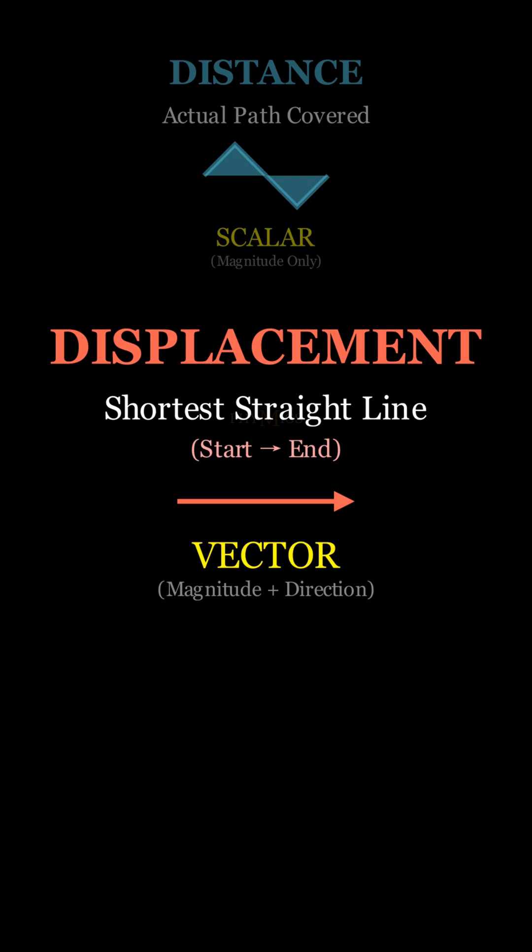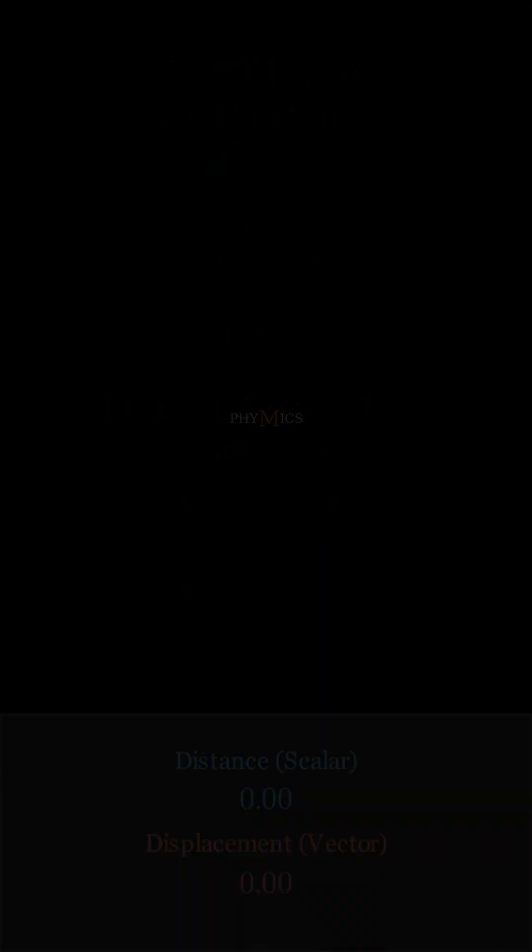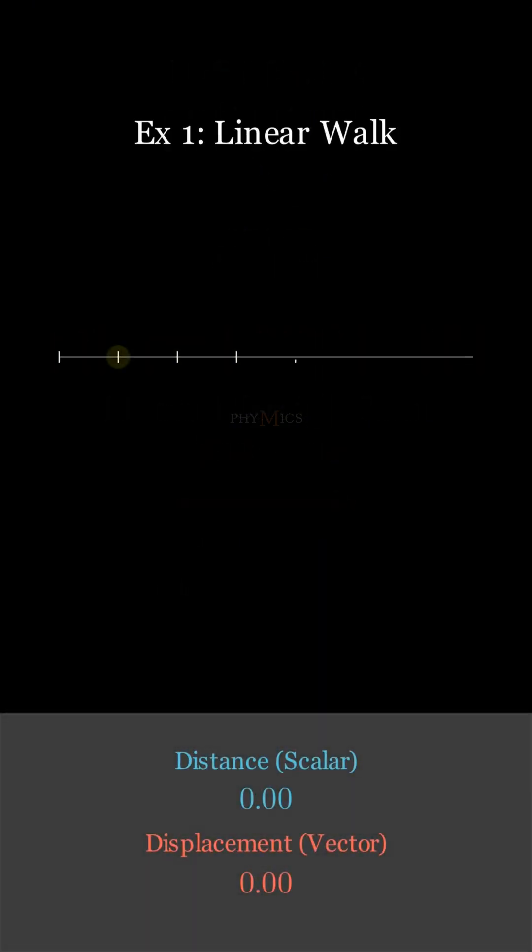Let us understand the difference between these two with a few examples. In the first example, we have an object moving towards right along a straight line. Initially, the object moves four steps to the right. At this point, both distance and displacement are four.